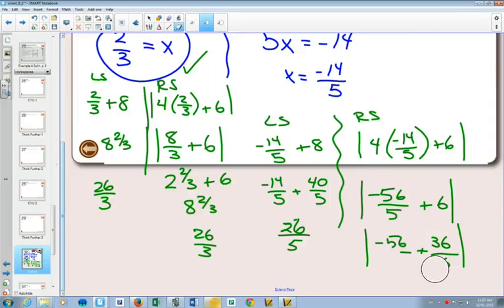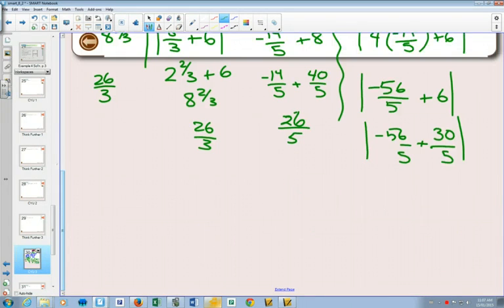Over 5, over 5. This will be now 30. And add those together, and you get absolute value of negative 26 over 5. And when you get that single number, that's when you can apply the absolute value. And it works.